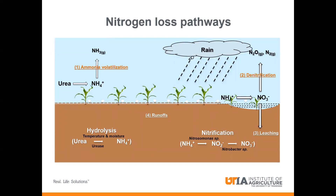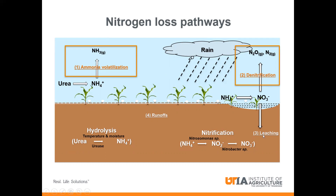Let's talk about nitrogen loss pathways. There are several: ammonia volatilization, denitrification, leaching, and surface runoff. These are ways you can lose your nitrogen. For my talk, I'll focus on ammonia volatilization, denitrification, and leaching.